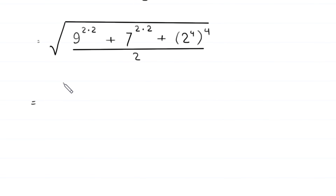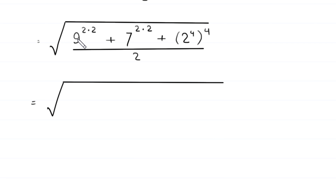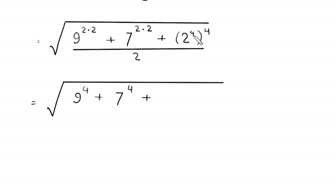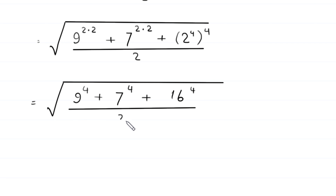Next, square root of: 9 to the power 2 times 2 becomes 9 to the power 4, plus 7 to the power 4, plus 2 to the power 4 whole to the power 4, divided by 2.